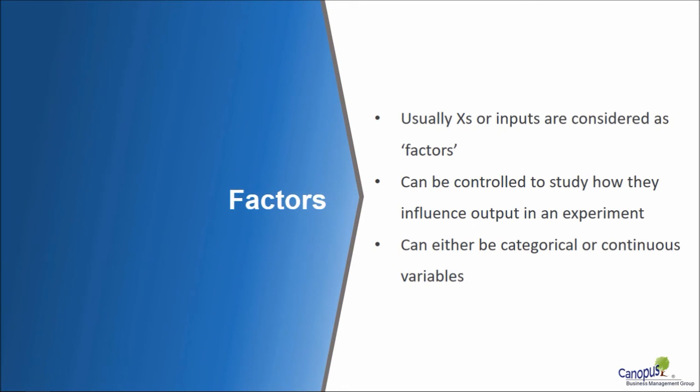Next we are going to talk about factors. Factors refers to Xs or inputs which are used in the experiment. So process parameters which are going to be altered, which are going to be controlled and changed, as a result of which the output is going to change. And hence we want to study the influence of these factors on the output.